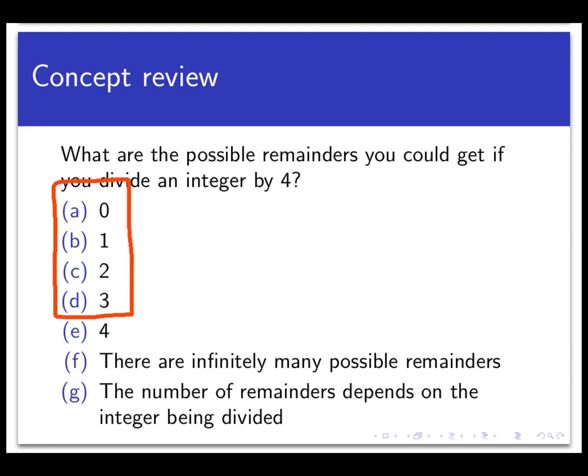So the answers here are the first four choices. You could have 0, 1, 2, or 3 as remainders if you divide something by 4. No matter what integer you are dividing 4 into, let's call it A, the division algorithm says that there are unique integers Q and R such that A equals 4Q plus R.